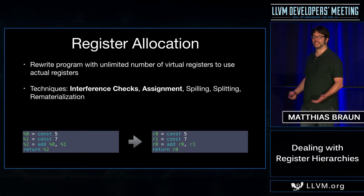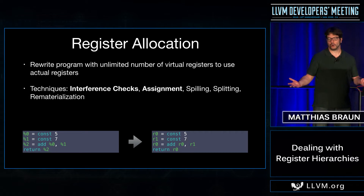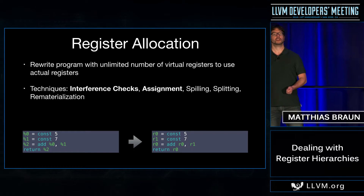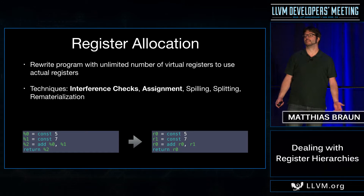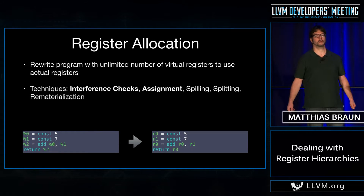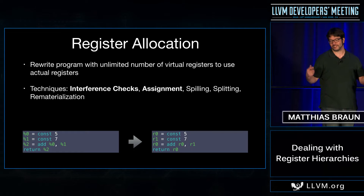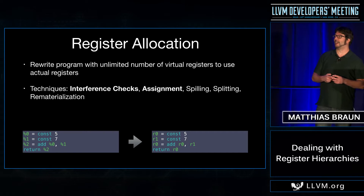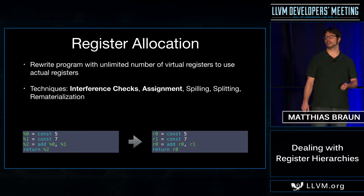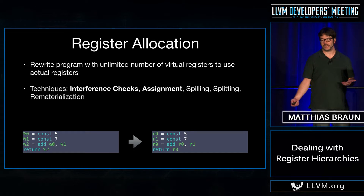Let's start with the obligatory slide about what register allocation actually is. Programs in earlier passes of the compiler use an unlimited number of virtual registers to store their intermediate values. This makes it easy for those early passes — we can use SSA form and create a new variable for each assignment. The task of rewriting the program to use the available limited number of hardware registers is left to the register allocation pass, which comes later in the compiler.